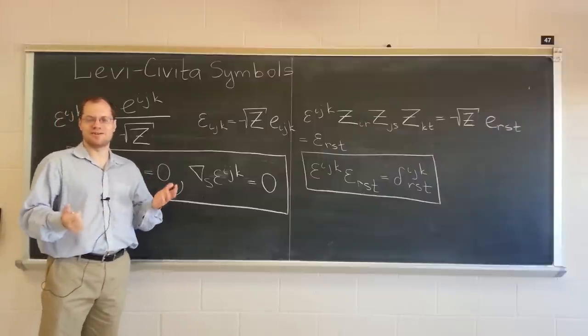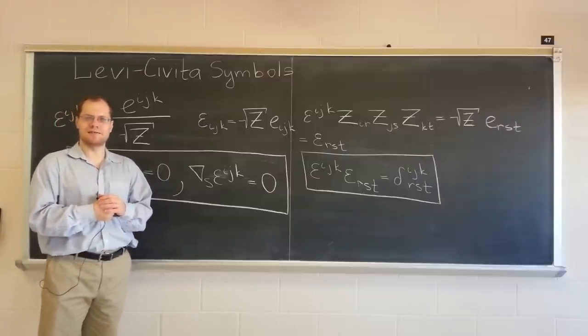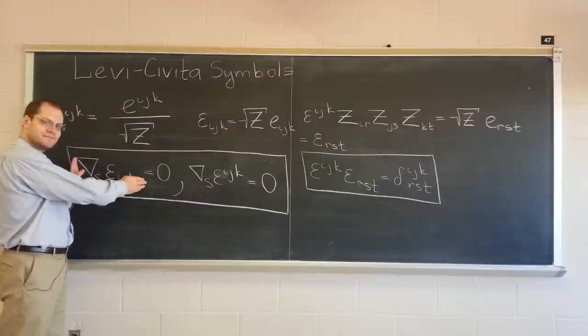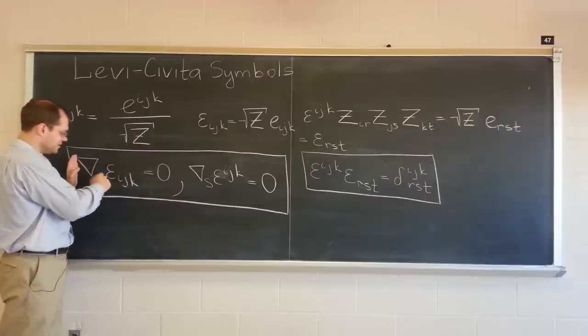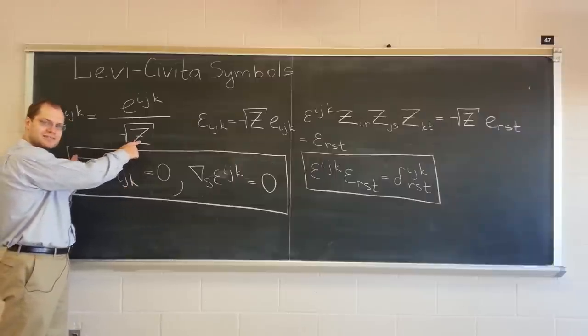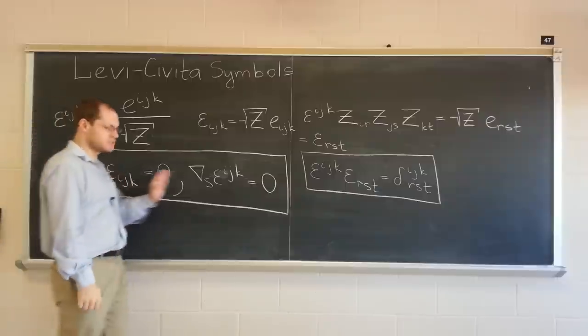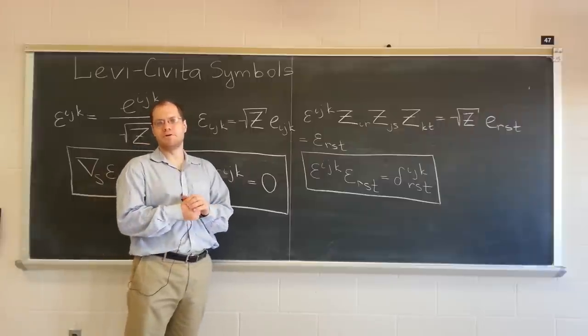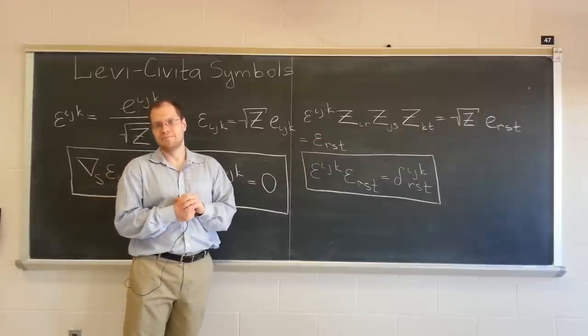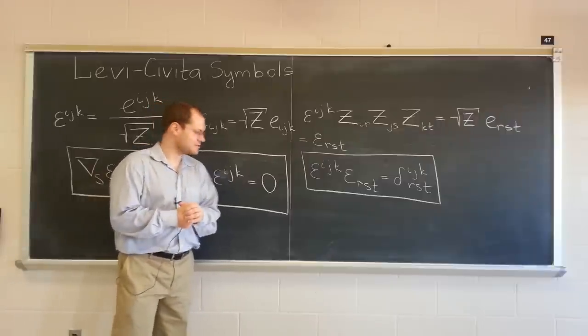This completes our short introduction to the Levi-Civita symbols. This does deserve to be discussed in a little greater detail, because there is the derivative of this object that's involved. So we'll certainly come back to this. And in the next lecture, we'll talk about the beautiful Frobenius theory. Thank you very much.